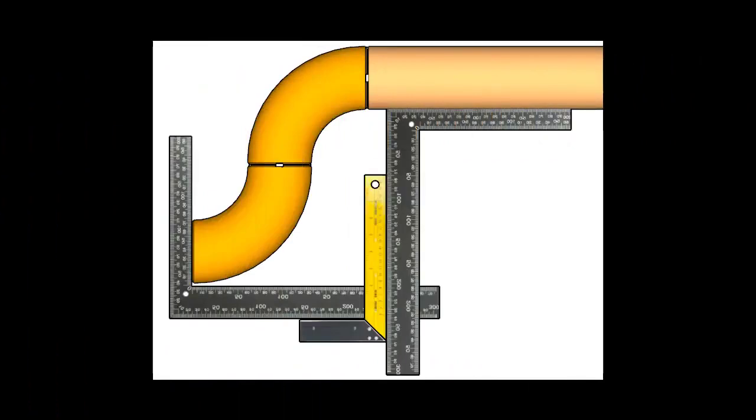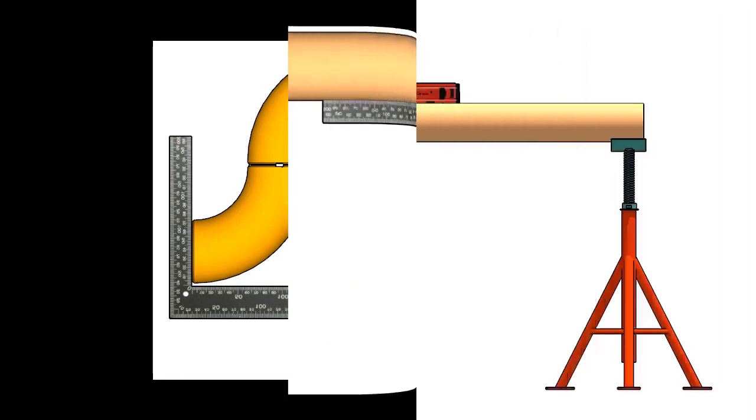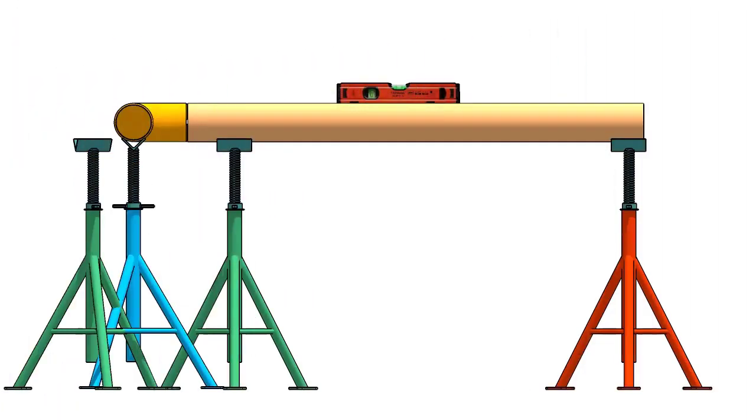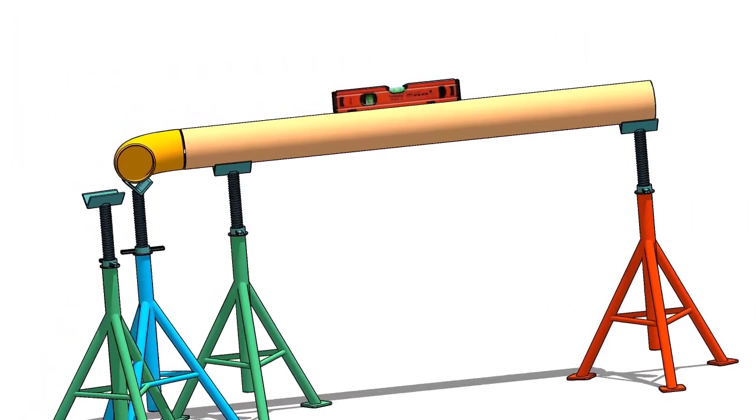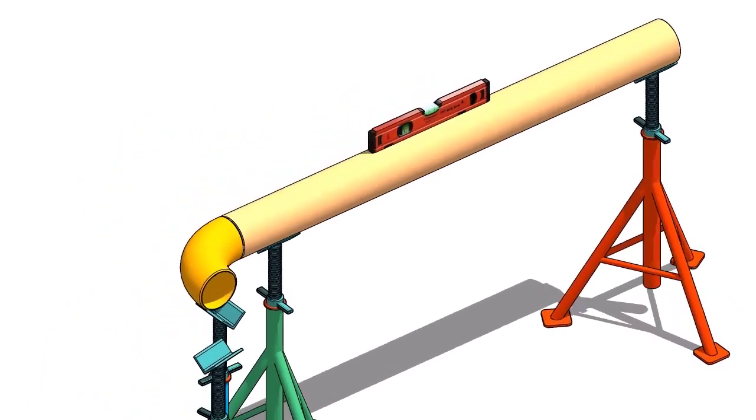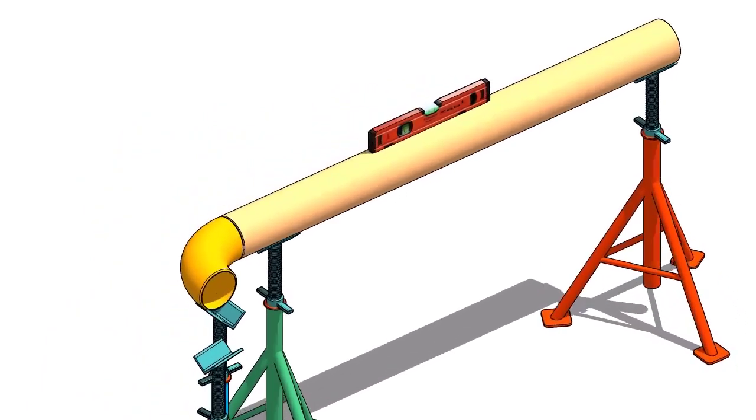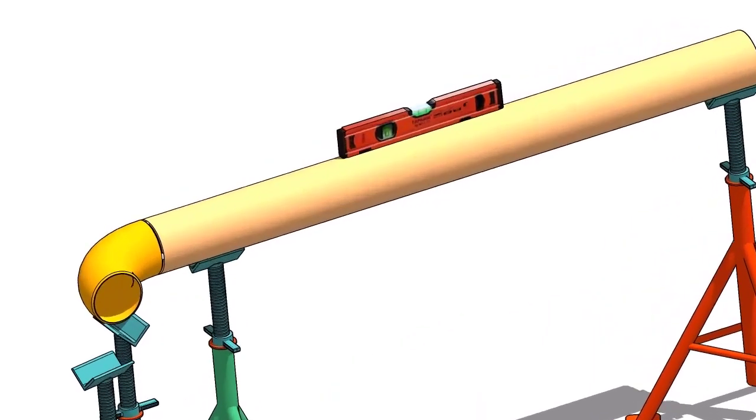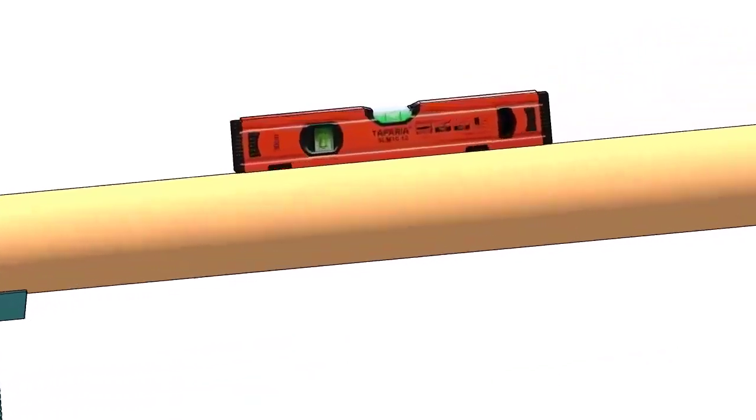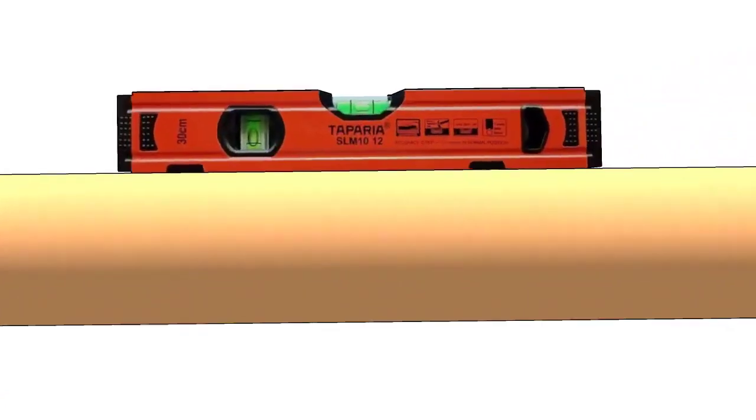In this portion, I will show you how to fit up a 90-degree elbow to a fixed 90-degree elbow. Check the level of the spool as shown. Check the length of the spool as shown.